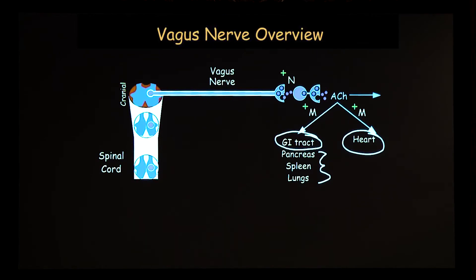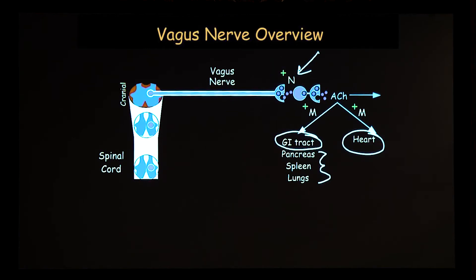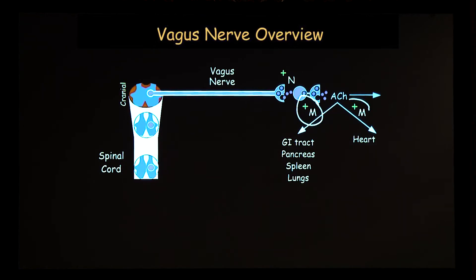There are two types of receptors for acetylcholine. One is nicotinic — nicotinic receptors are responsible for ganglionic transmission. And muscarinic receptors are found in the heart and in these end organs.